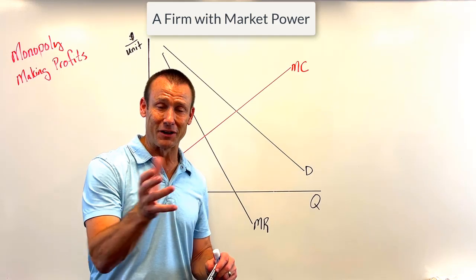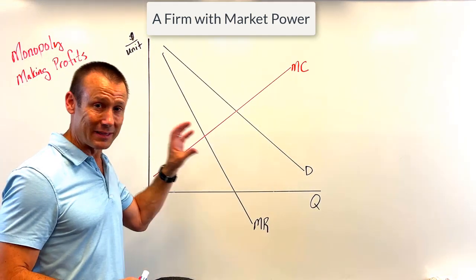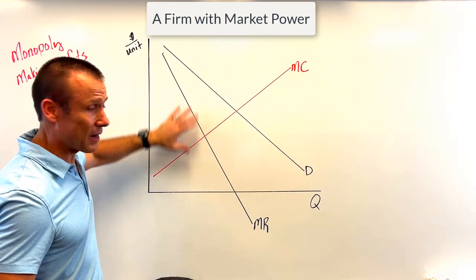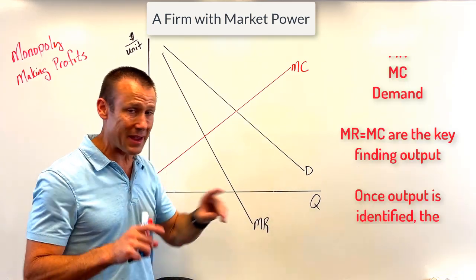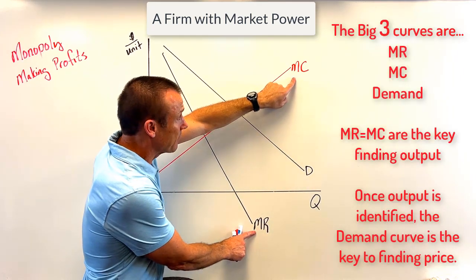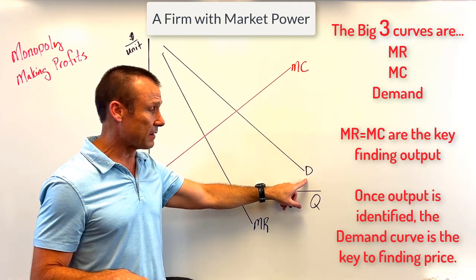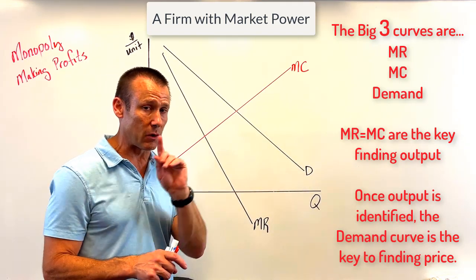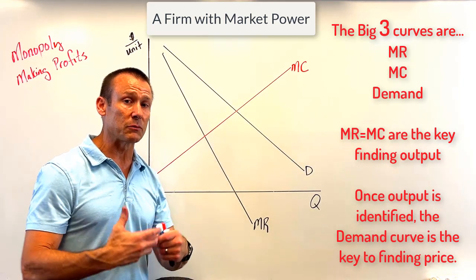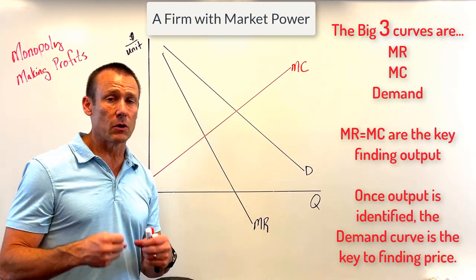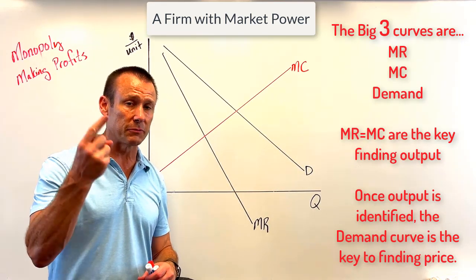Let's get to it. What you see right off the bat are the big three curves: MC, MR, and demand. The key is that MC and MR determine output. Once I have an output, I can find price by heading to my demand curve. I'll walk you through that in just a second. Now I also need to talk about the big four and the big five — the big three are MC, MR, and demand.